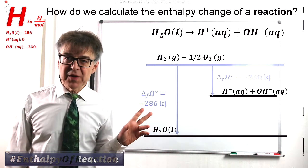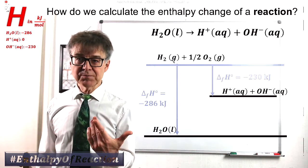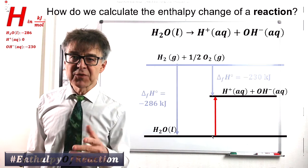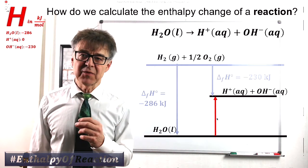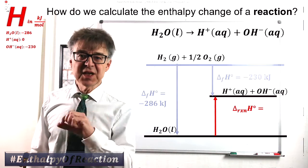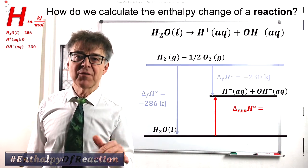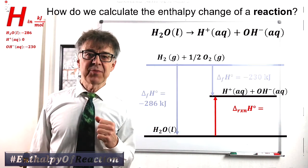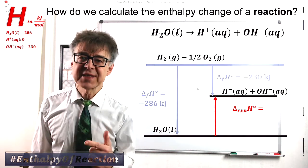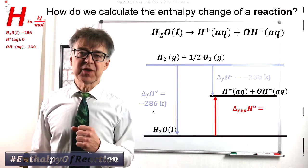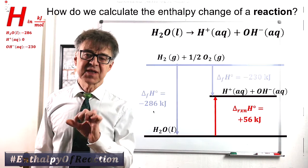The red arrow is the enthalpy of reaction. It starts at the reactant and ends at the product. We have to treat this diagram like a vector diagram. The enthalpy of reaction, the red arrow, is equal to the enthalpy of formation of the products, the short blue arrow, minus the enthalpy of the formation of the reactant, the long blue arrow. We end up with an enthalpy of reaction of plus 56 kJ.